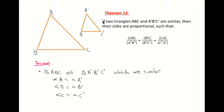We can also mark those angles as equal on your diagram — color them in if you want. So angle A equals A', angle B equals B', and angle C equals C'.